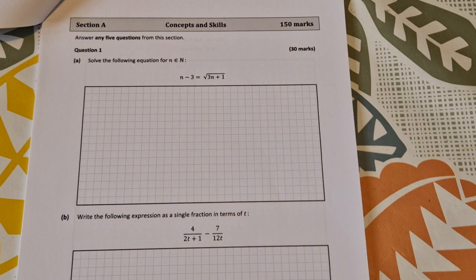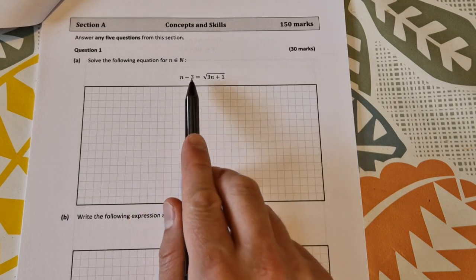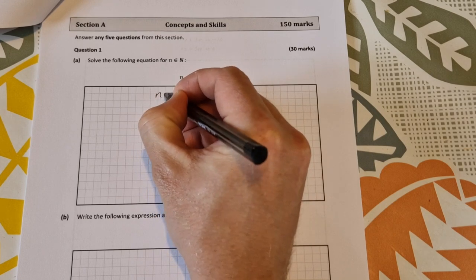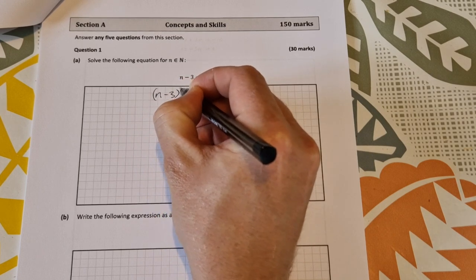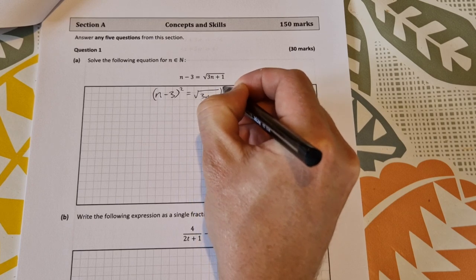In part A we have a surd equation and you're asked to solve the following equation for n. So with a surd equation we're going to start by squaring both sides. So that'll be n minus 3 squared is equal to the square root of 3n plus 1 squared.